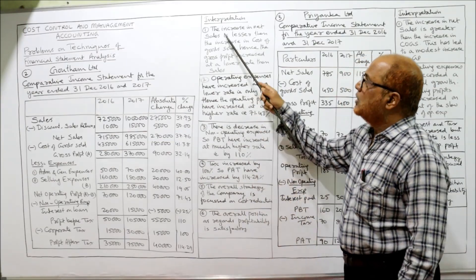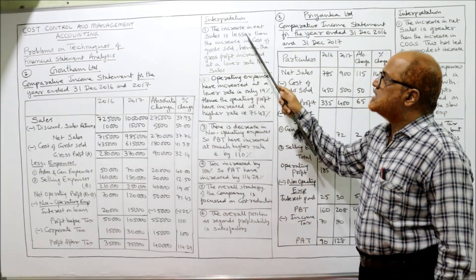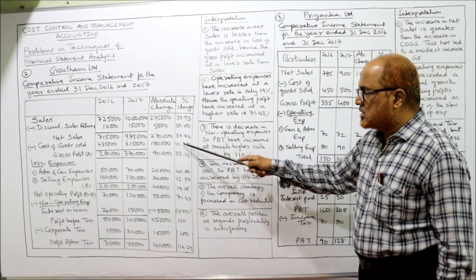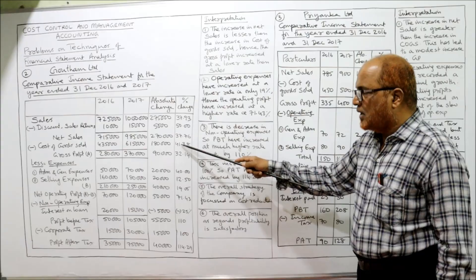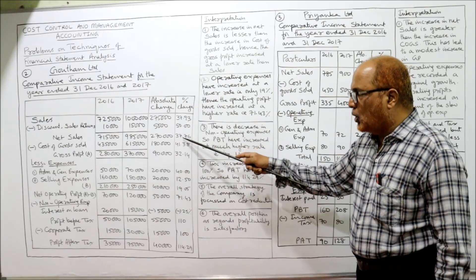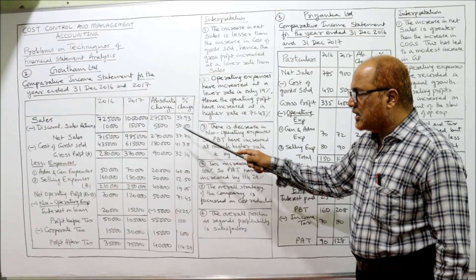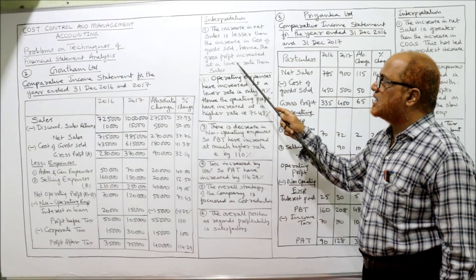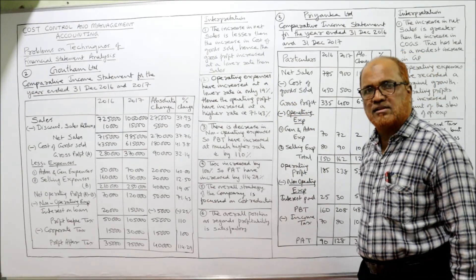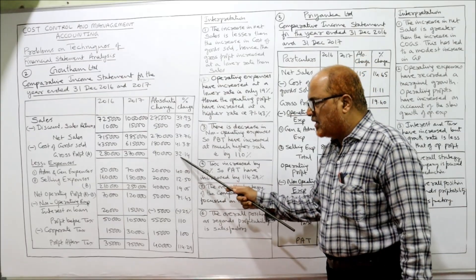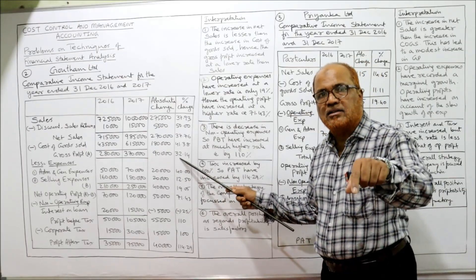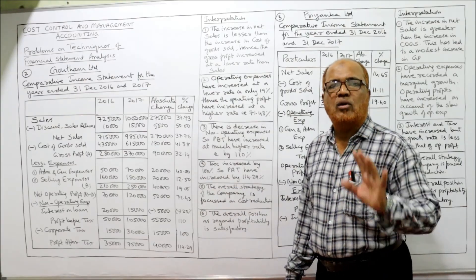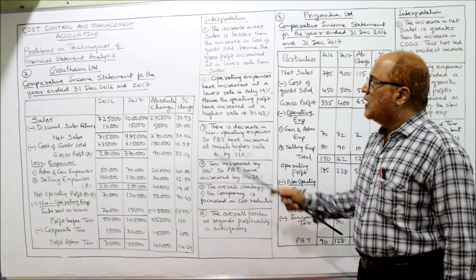So the increase in net sales is lesser than the increase in cost of goods sold, hence the gross profit increased at a lower rate than the sales. That is the first interpretation point.